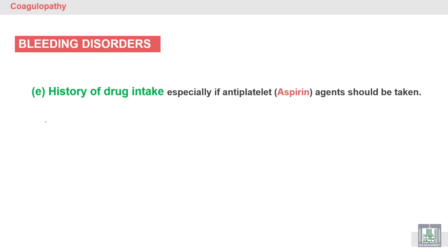History of drug intake is very important, especially aspirin, an anti-platelet drug. It should be taken and should be considered during the bleeding history of drug intake, because the drug may be the cause. Aspirin may lead to inhibition of the platelet functions and lead to bleeding.